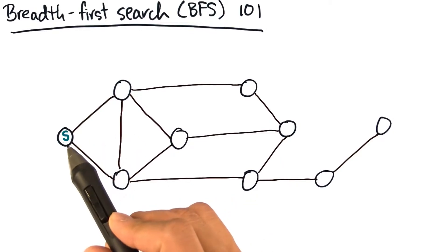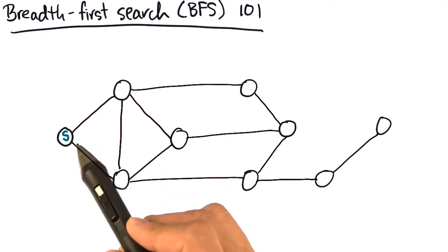Given a graph and a source vertex s, what's the distance of all other vertices of the graph from s? To find out, you can perform a breadth-first search or a BFS for short. Here's how you might do it.